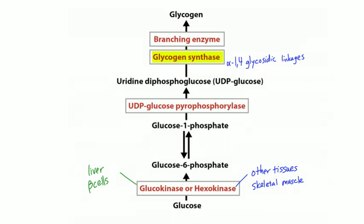Another enzyme, branching enzyme, makes branches in the glycogen chain by creating alpha-1,6 glycosidic linkages. Glycogen can get to be rather enormous, and branches help keep the molecule somewhat compact. So glycogen uses both alpha-1,4 and alpha-1,6 linkages. That's basically how you make glycogen.